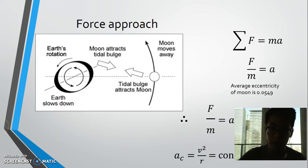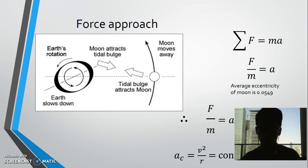So we can look at this effect from a forces approach. The sum of all forces acting upon the moon is equal to the mass times acceleration of the moon. And since the gravitational force of the tidal bulge and the earth is always pointing towards the earth, that means that the force is centripetal. It's always center-seeking and therefore the acceleration that the moon experiences is also centripetal.